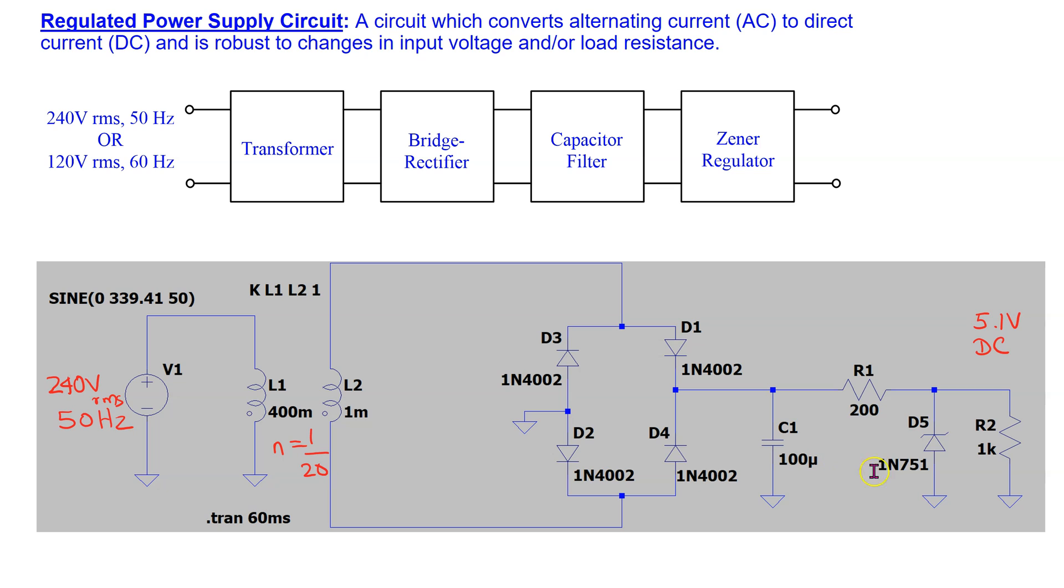By adding a Zener diode such as 1N751 to the circuit, we can now simulate the complete regulated power supply circuit. For instance, we can convert 240 volt RMS at 50 Hz on the input side to 5.1 volt DC at the output.